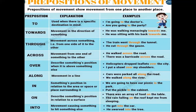Let's understand some prepositions of movement. 'To' is used when there is a specific destination in mind — for example, if you have decided you are going to a doctor's clinic, your destination is fixed. So you say: 'I am going to the doctor's house' or 'I am going to the party.' 'Towards' shows movement in the direction of something — like 'he was sitting with his back towards me.'